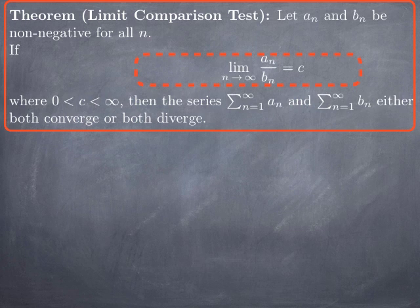Of course, for the series of a_n or the series of b_n to be possibly convergent, we need the limit of a_n and the limit of b_n to be zero. So you can think of a_n and b_n as sequences going to zero, and when you look at the quotient, you are comparing at what rate they are going to zero. If the limit of the quotient is a non-zero finite constant, that means a_n and b_n go to zero essentially at the same rate, and the conclusion is that both series behave the same way — they both converge or both diverge.